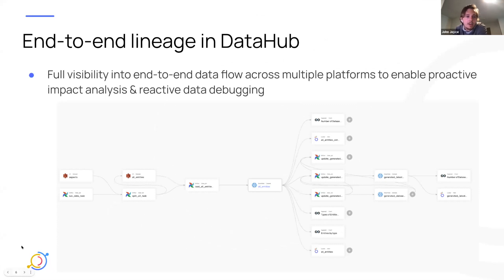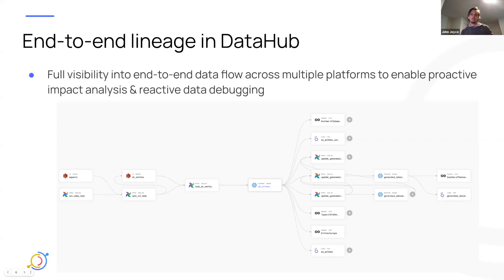Taking a step back, the goal of Lineage as a feature in DataHub is to provide full visibility into your end-to-end data flow that spans across data platforms. Data ecosystems are quite complex and it's very difficult to understand how data is actually moving. This helps unlock proactive impact analysis — understanding who's going to be affected when you make a change to a particular data asset or data job.